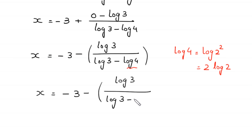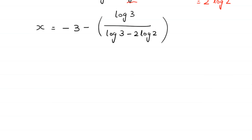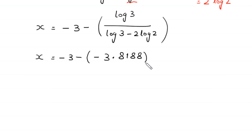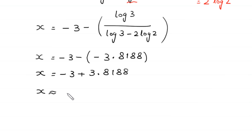We replace log of 4 with 2 times log of 2. The value of log of 3 over the quantity log of 3 minus 2 times log of 2 equals approximately 3.8188. So x equals negative 3 plus 3.8188, which gives us x equals 0.8188. This is the final answer of this equation.